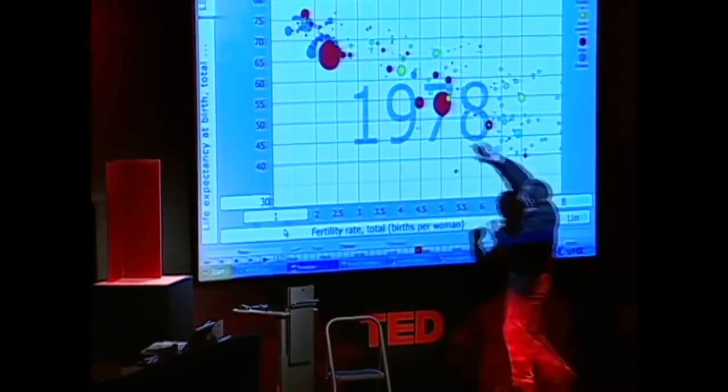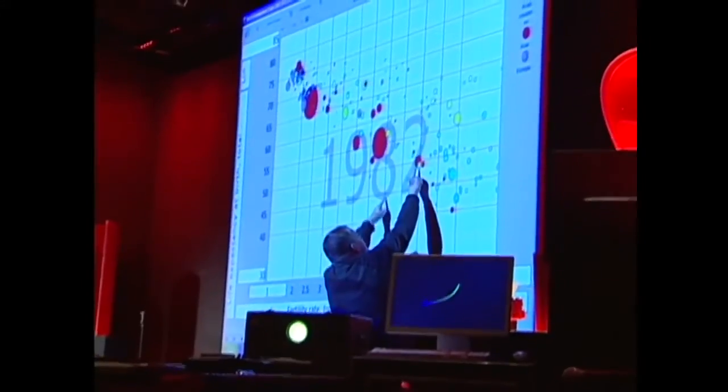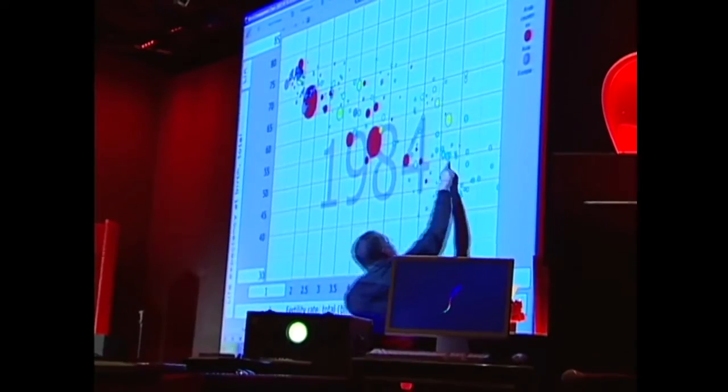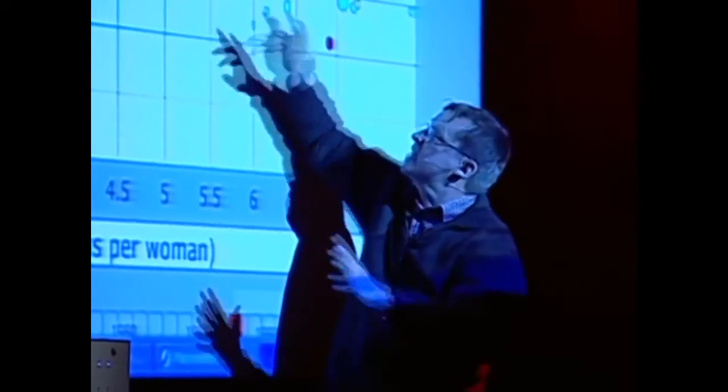The Africans are the green down here, they still remain here. This is India, Indonesia is moving on pretty fast, and in the 80s here, you have Bangladesh still among the African countries there, but now Bangladesh, it's a miracle that happens in the 80s.